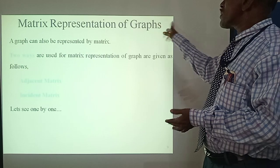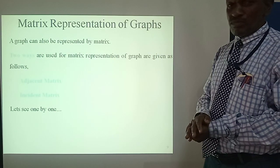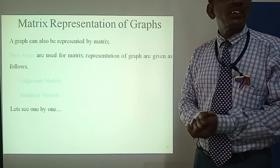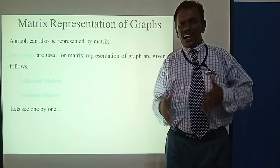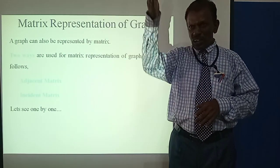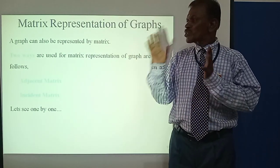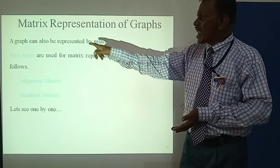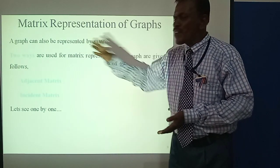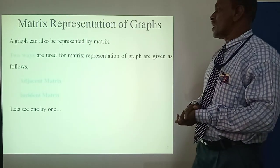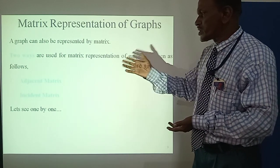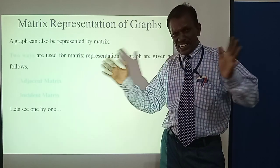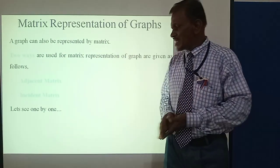Matrix Representation of Graphs. A matrix is a rectangular array of numbers arranged in rows and columns. A graph can also be represented by a matrix. There are two types of matrix representation for graphs: adjacency matrix and incidence matrix.